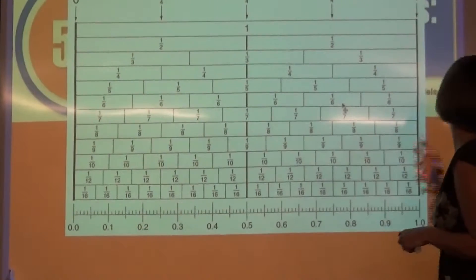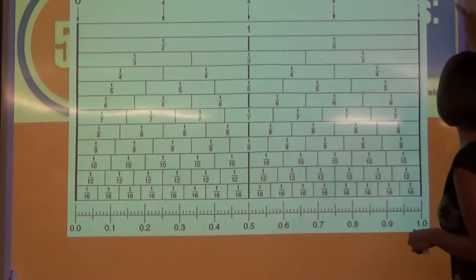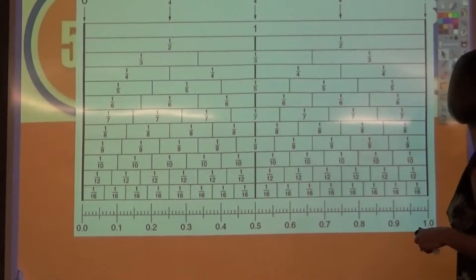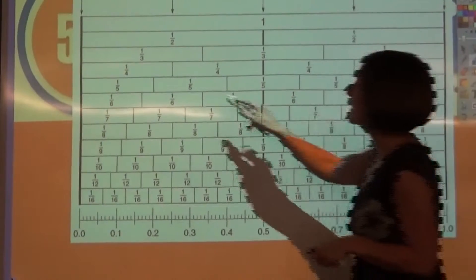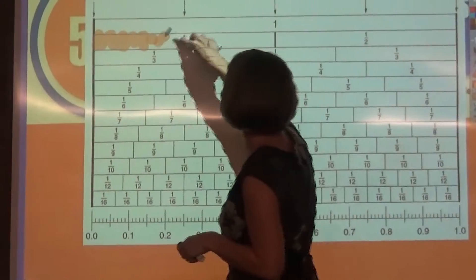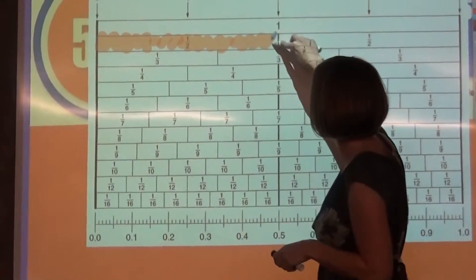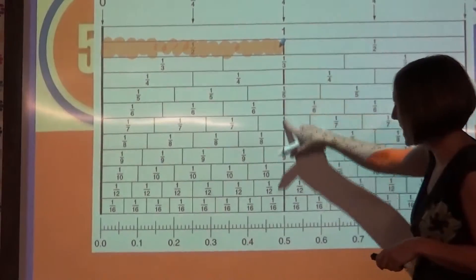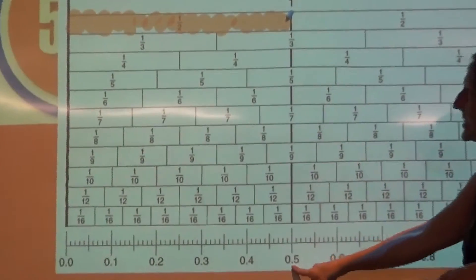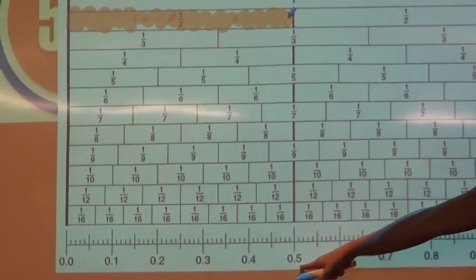If we were to look at some different fractions, let's start with an easy one, let's do half. So if we color in our fraction stick for a half, if we follow this line down to our number line, we can see that a half is equal to 5 tenths.